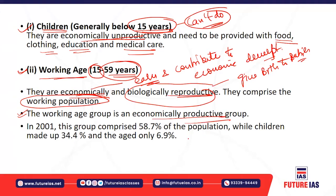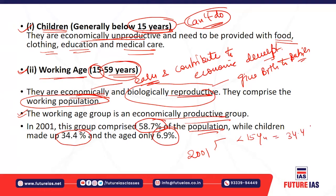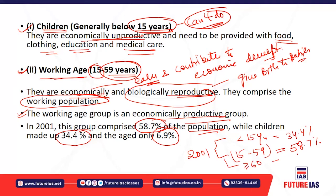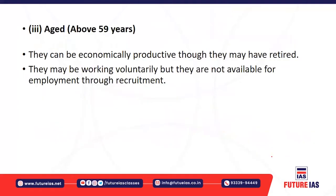According to the 2001 census, the working age group (15–59 years) comprised 58.7 percent of India's population. Children below 15 years comprised 34.4 percent, and those aged 60 and above comprised 6.9 percent. The third category is persons above 59 years, who, though possibly retired, may still perform some work voluntarily but are not generally available for regular employment recruitment.